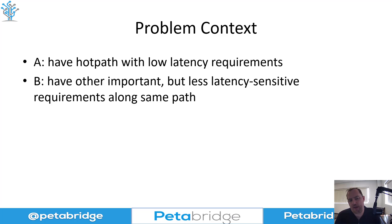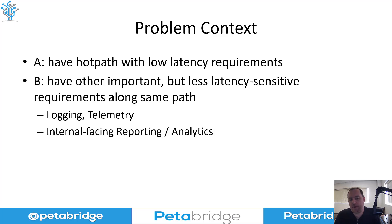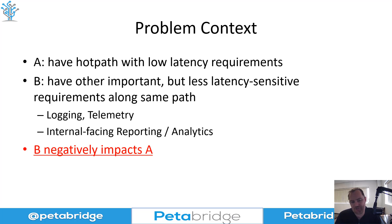However, we might also have a secondary set of requirements that are less latency-sensitive but still really important. Examples include observability — logging and telemetry — or internal-facing business reports and analytics, where decision makers want to gather data from how customers interface with the system. Both of these are really important requirements, but most naive implementations result in those secondary requirements having negative side effects on the hot path.